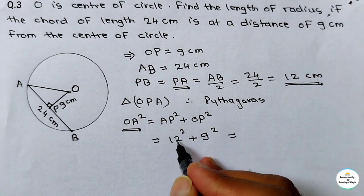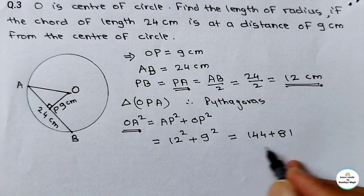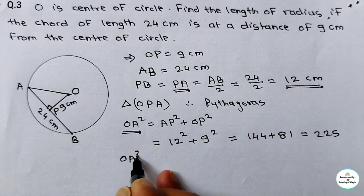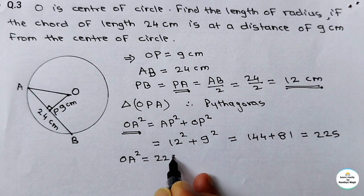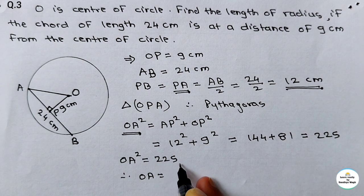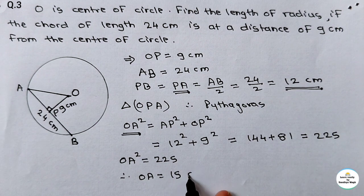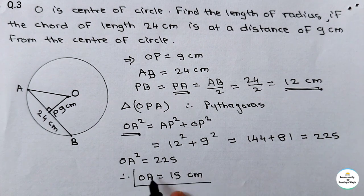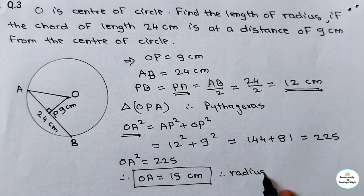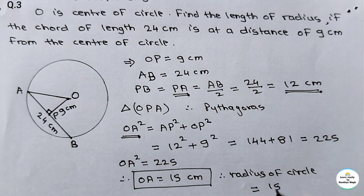Now calculate: 12² = 144, plus 9² = 81. Addition of both is 225. So OA² = 225. Therefore OA equals the square root of 225, which is nothing but 15 cm. So we got the radius of circle — radius of circle is equal to 15 cm.